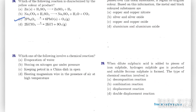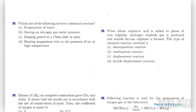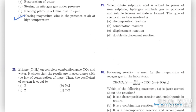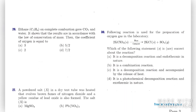Question twenty-five: which one involves a chemical reaction — evaporation of water, storing nitrogen gas under pressure, keeping petrol in a china dish in the open, or heating magnesium wire in air at high temperature? The right option is D. Magnesium reacts with oxygen to give magnesium oxide.